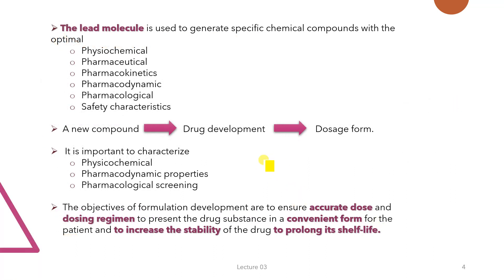The lead molecule is used to generate specific chemical compounds with the optimal chemical, physico-chemical, pharmaceutical, pharmacokinetic, pharmacodynamic, pharmacological, and safety characteristics of the compound. The potential for these features can be predicted from pre-clinical and clinical studies, and for proper and speedy drug development, it is obligatory to select a compound with favorable pharmaceutical and pharmacological properties.